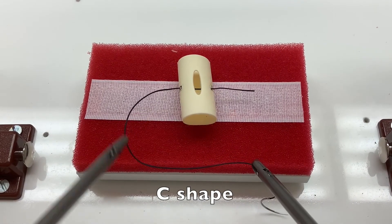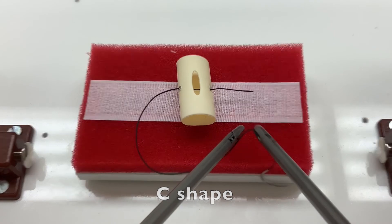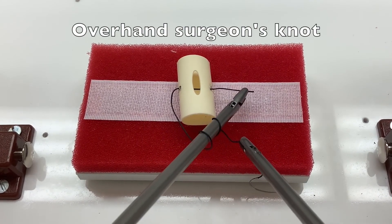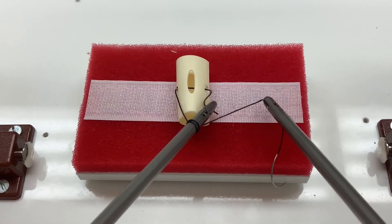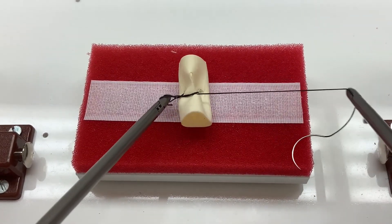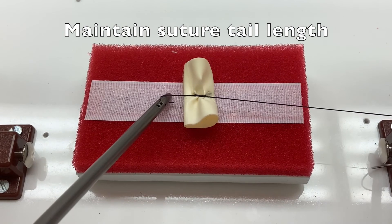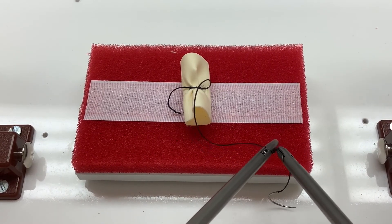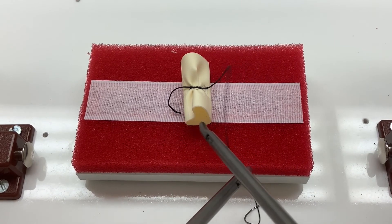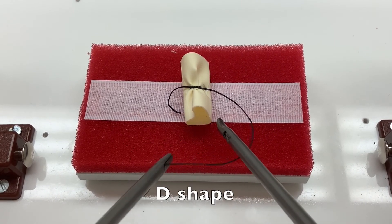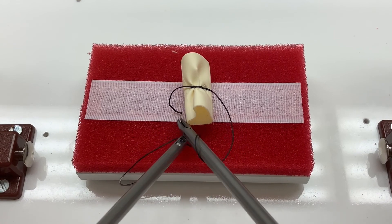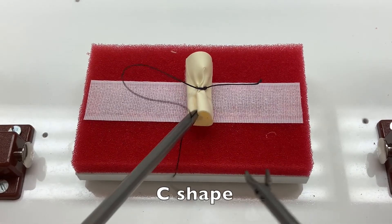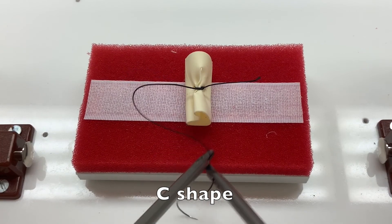The right hand grasps the needle end of the suture 1-2cm from the needle. When securing the knot, maintain the length of the suture tail. Transfer the needle end of the suture and position the suture in a D shape. Repeat this process once more with the suture in a C shape.